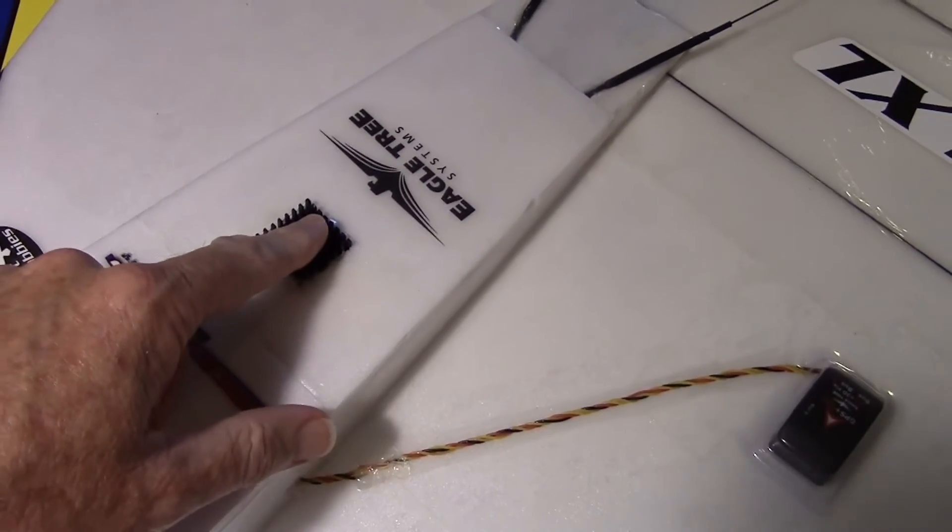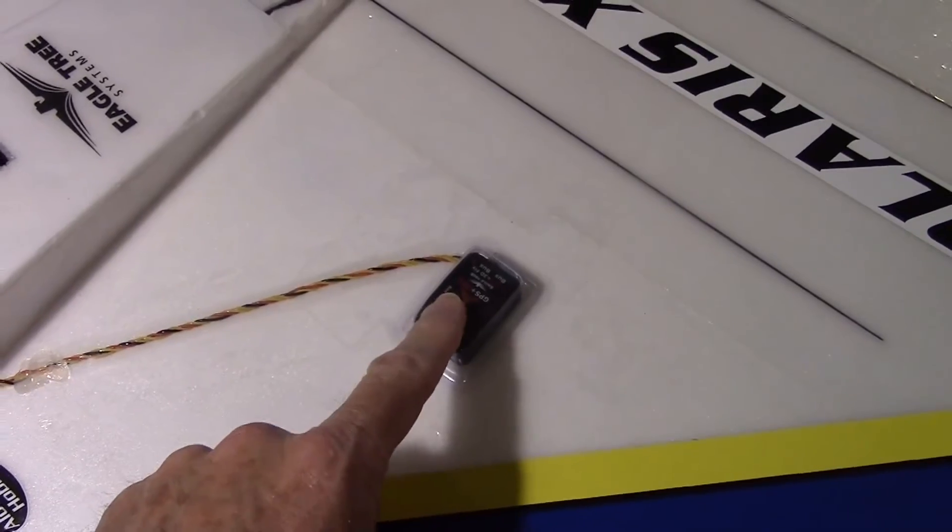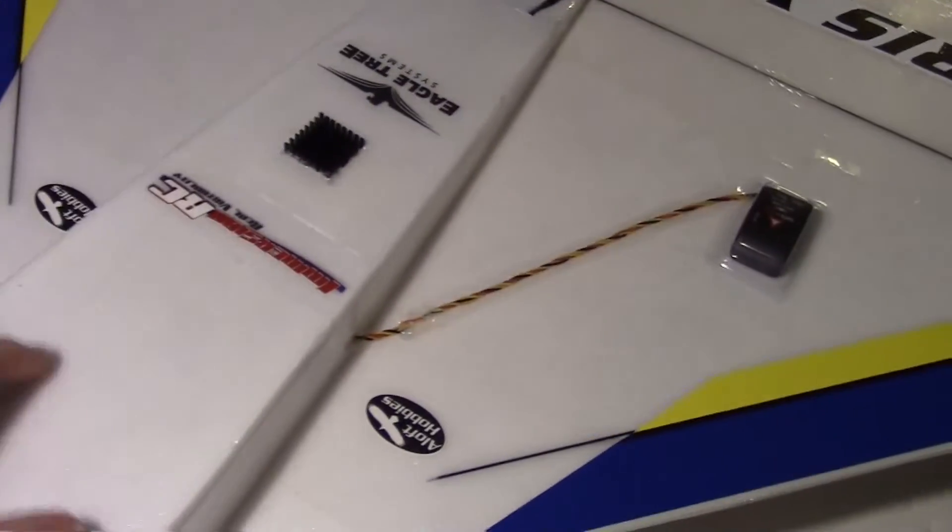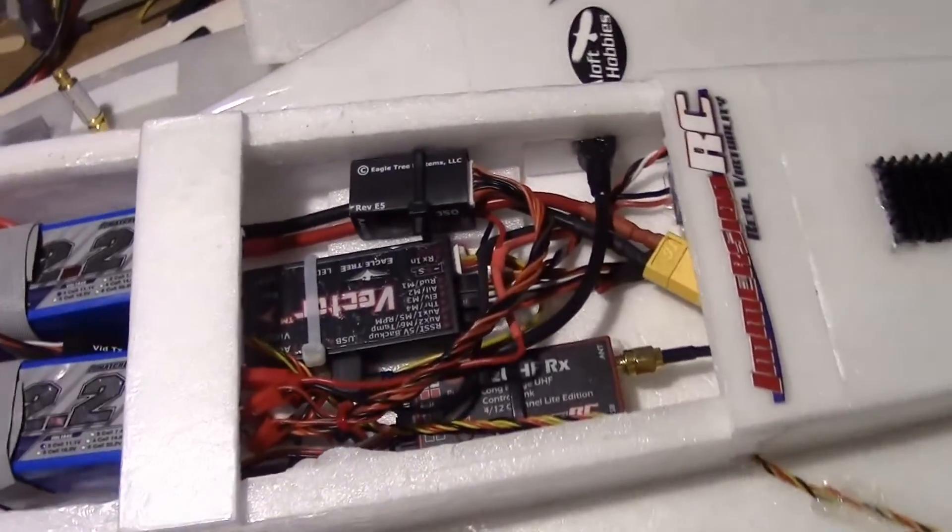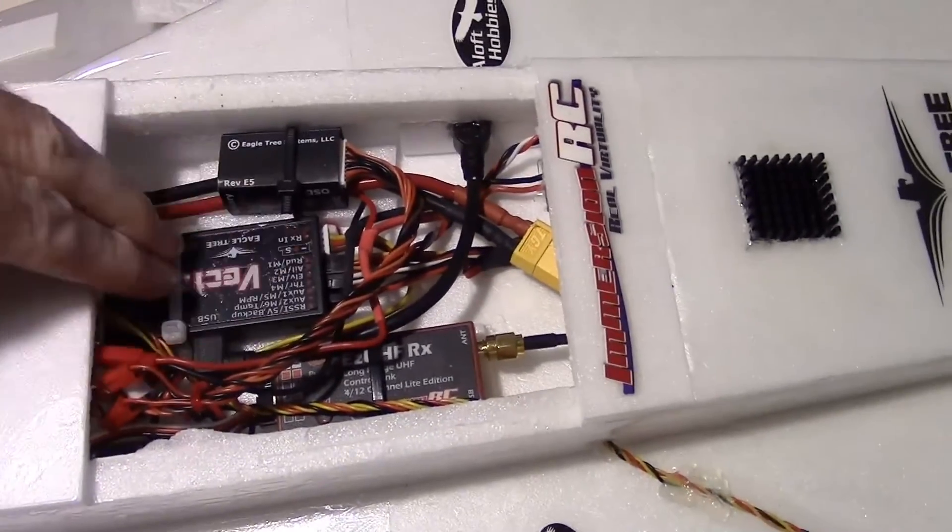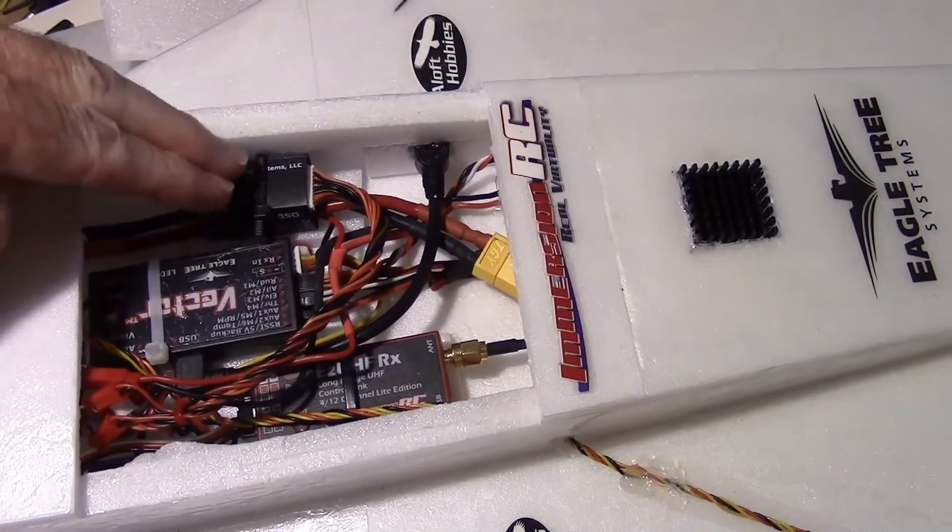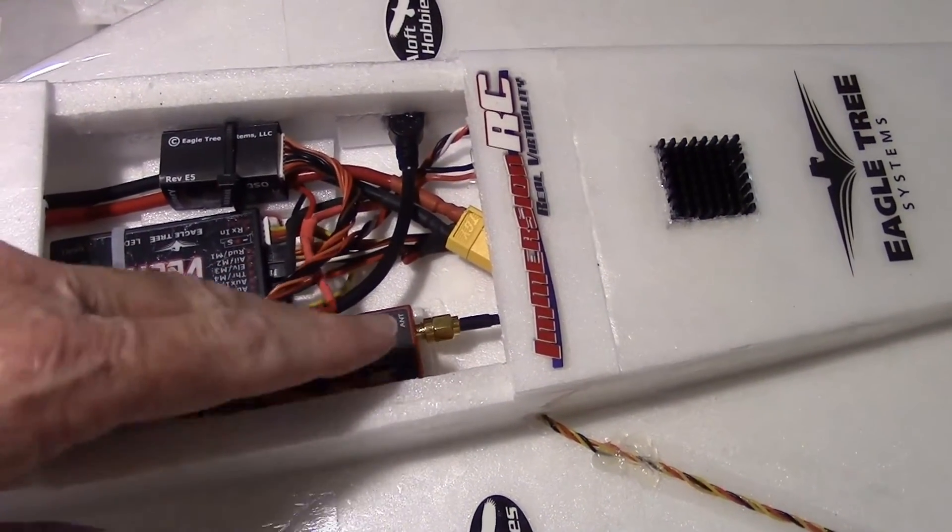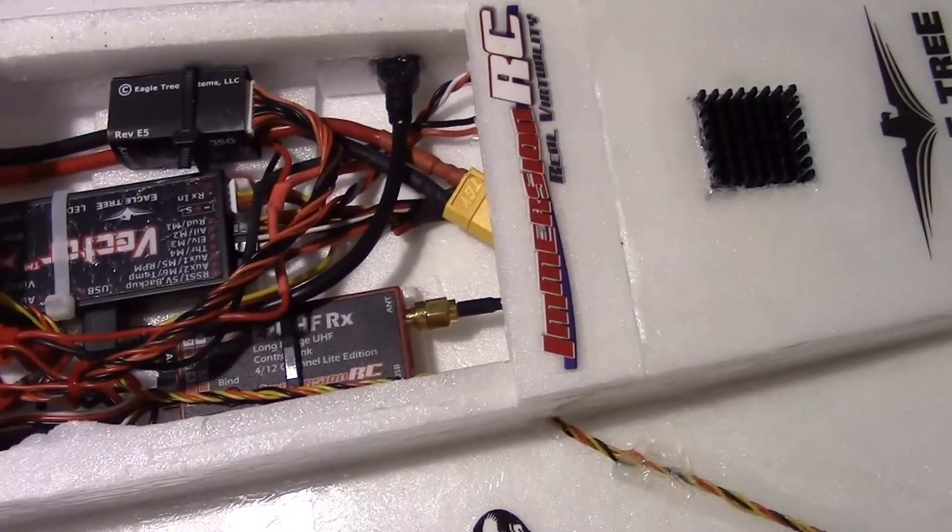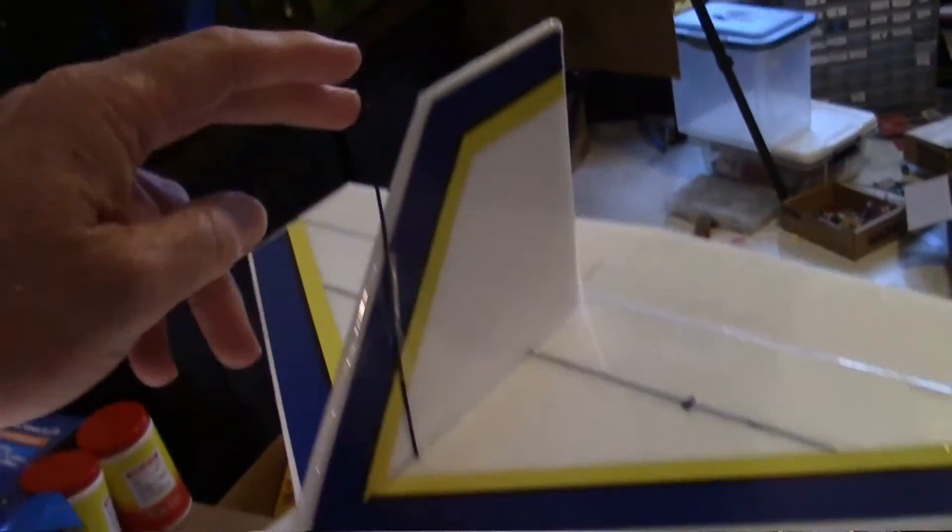All right, over here is the heat sink for the ESC. And right here is the GPS for the Eagle Tree Vector. Okay, now I've cut this hatch open so we can get a look inside. And so here's the final setup. Vector is mounted right here. The power module for the Eagle Tree Vector is over here. And the EZUHF receiver, this is the long-range receiver, is mounted right there. The antenna for it, for the receiver, is right here. It comes out right there at the vertical stabilizer.